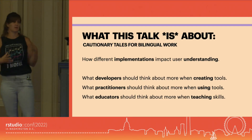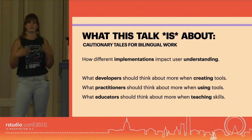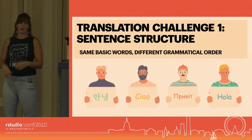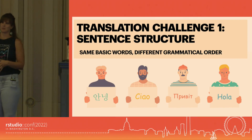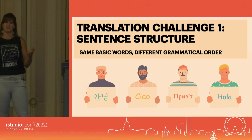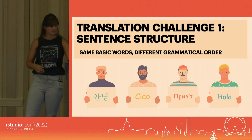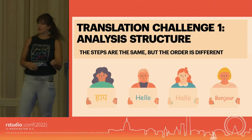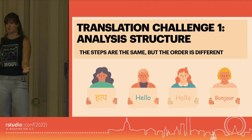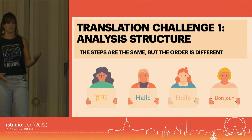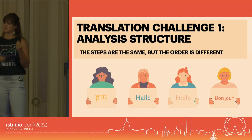Let's dive in. Thinking about how you learn a new language or translate between languages — and now I'm thinking back to Spanish and French — probably the first thing that comes to mind is grammar, and specifically sentence structure. Why do the same words go in a totally different order in different languages? The parallel in programming languages is: what's the structure of your analysis? You have to do multiple steps, but in different implementations, those steps might happen at different times.